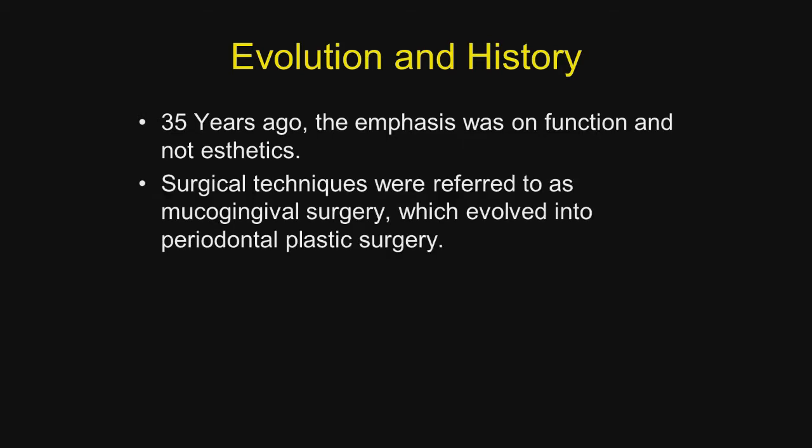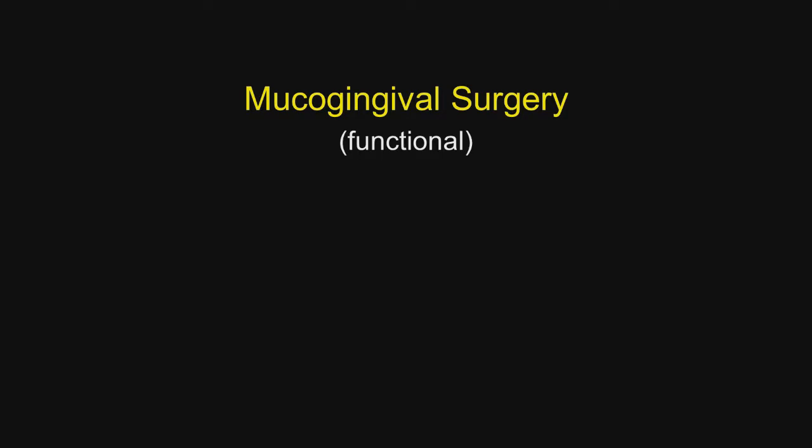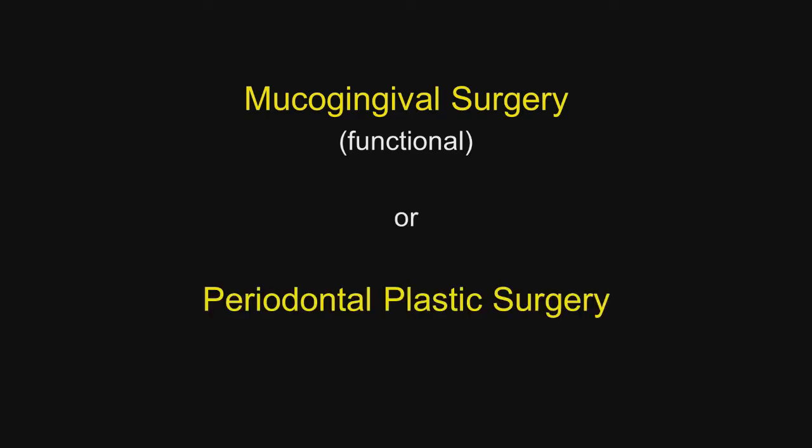Surgical techniques were referred to as mucogingival surgery, which eventually evolved into periodontoplastic surgery. Mucogingival surgery is designed to produce a functional result, whereas periodontoplastic surgery is designed to produce not only a functional result, but also an aesthetic result.